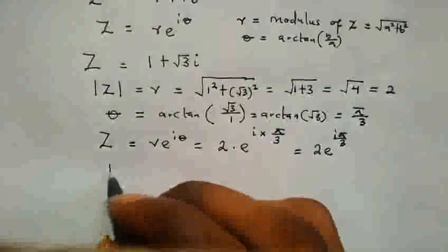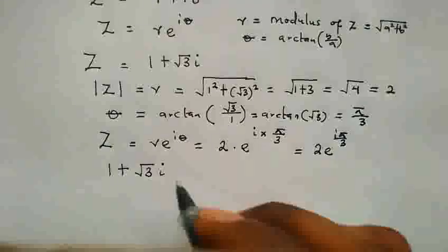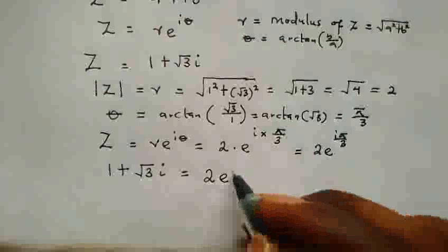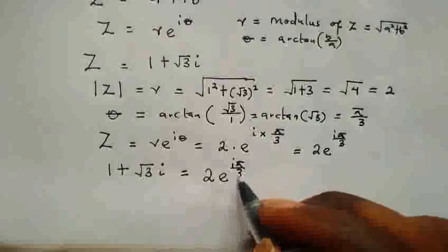So we can say that 1 plus square root of 3I is equal to in exponential form as 2 times E raised power I pi all over 3.